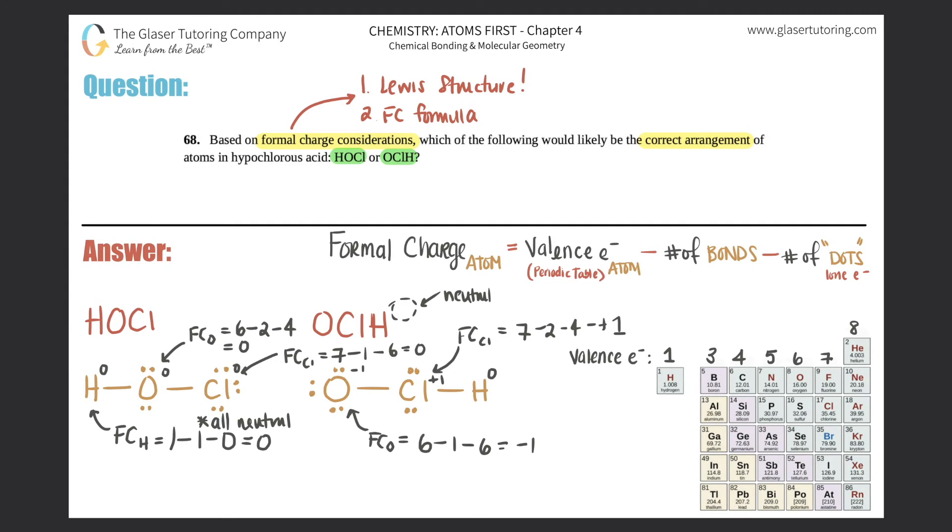Now we have to figure out what formal charges tell us. The more stable a compound, the less charges there are, so I'll say less charges the better. In the one on the left, they were all neutral—zero, zero, and zero—but on the right there was a negative one and a positive one, which means that OClH in general is not as preferred as HOCl.